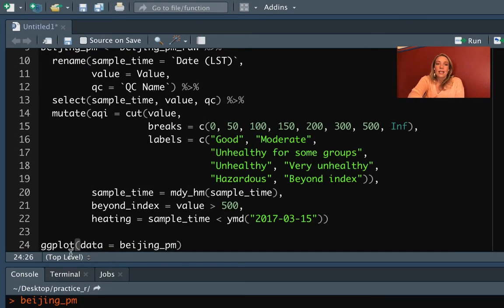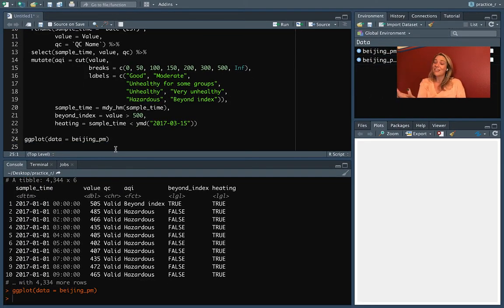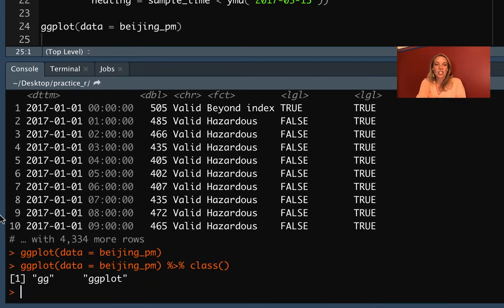All right, so our first step again is this ggplot. If you run just that, it will create a ggplot object. And something will pop up in your plot section, but it won't have anything in it yet. We haven't added any geoms. We haven't done any mapping to aesthetics or anything like that. So right now we have that object, but we're not really doing anything with it. And if you want to double check again, you can pipe this output into the class function, and you'll see that we have it as this ggplot object.